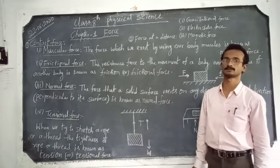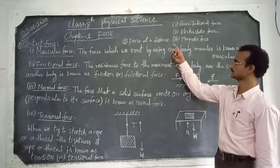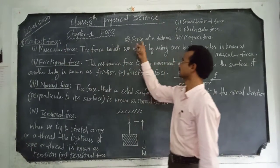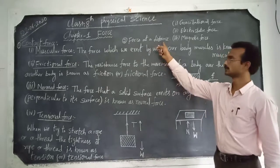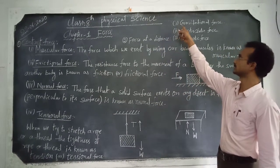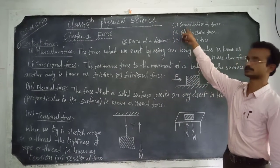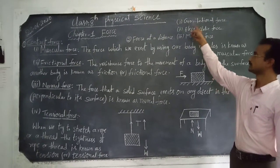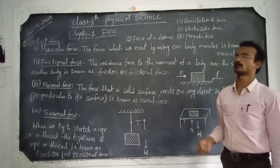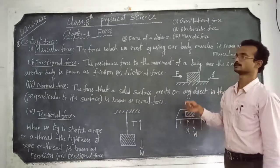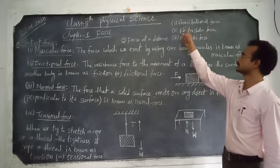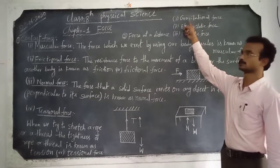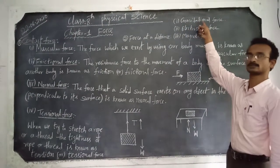As I said, force is divided into contact force and force at a distance. Force at a distance is again of three types: gravitational force, electrostatic force, and magnetic force. When the earth tries to pull an object towards its center, that pulling force of the earth is known as gravitational force.